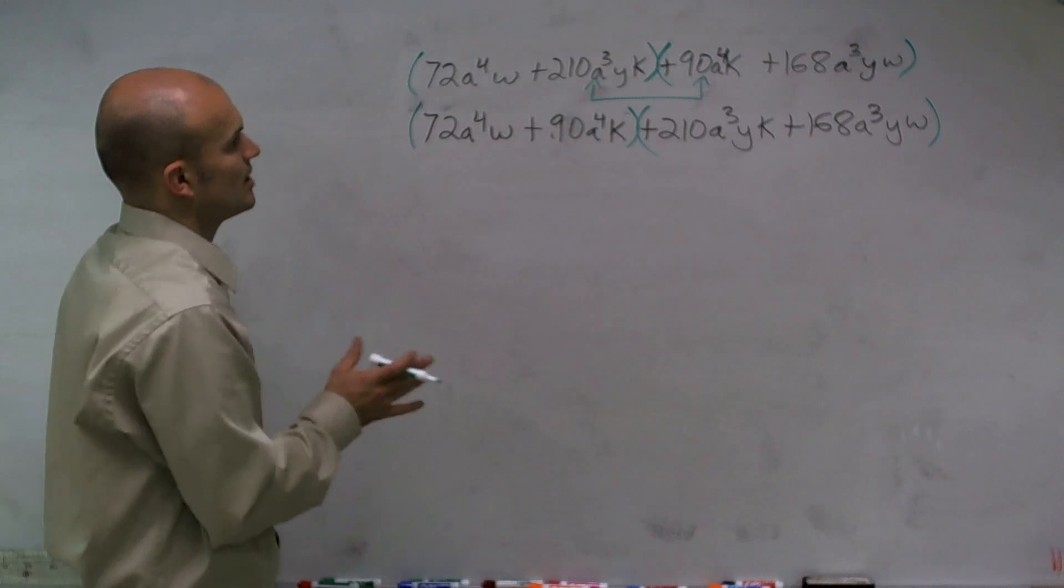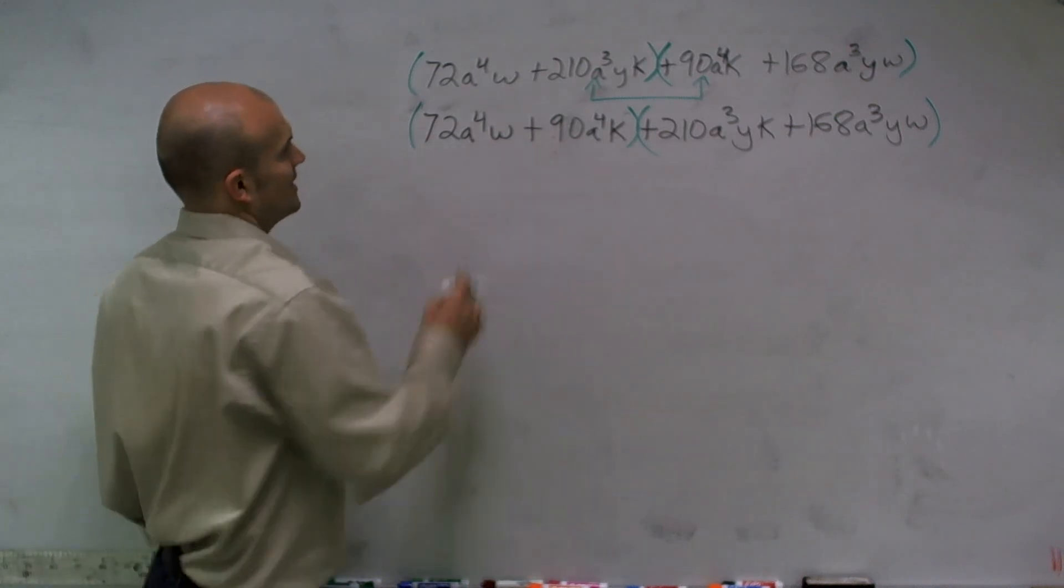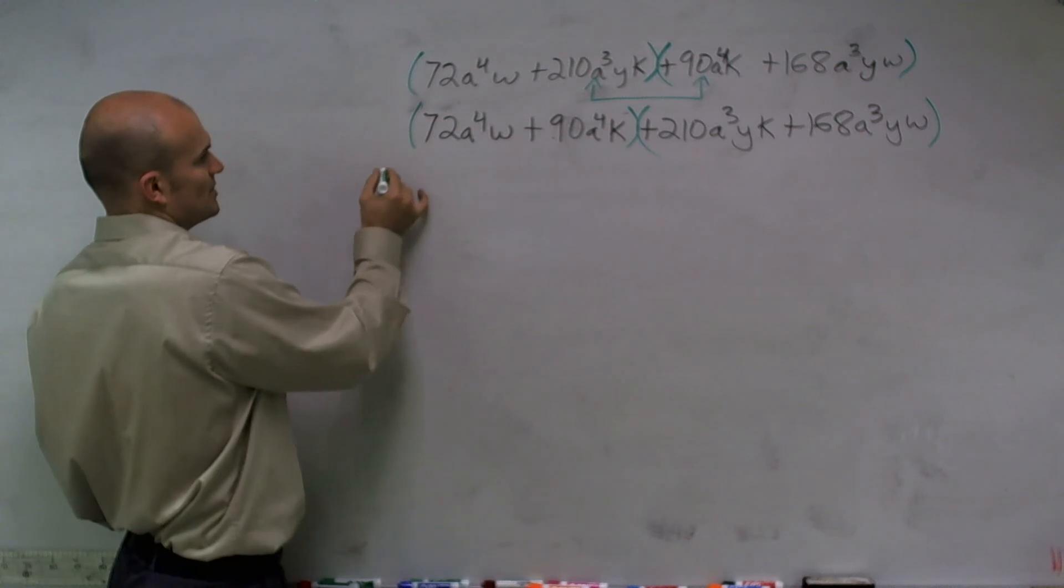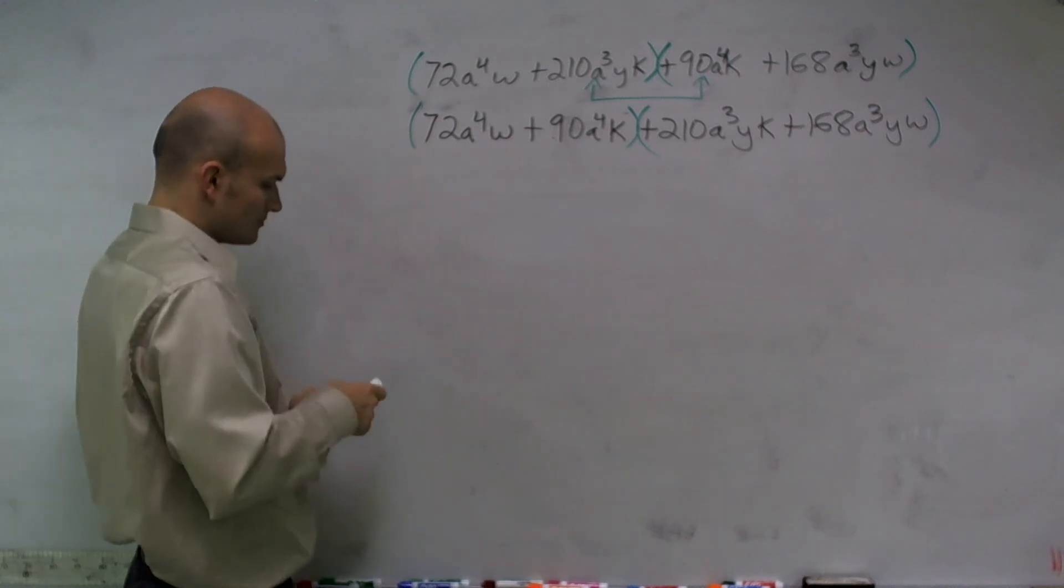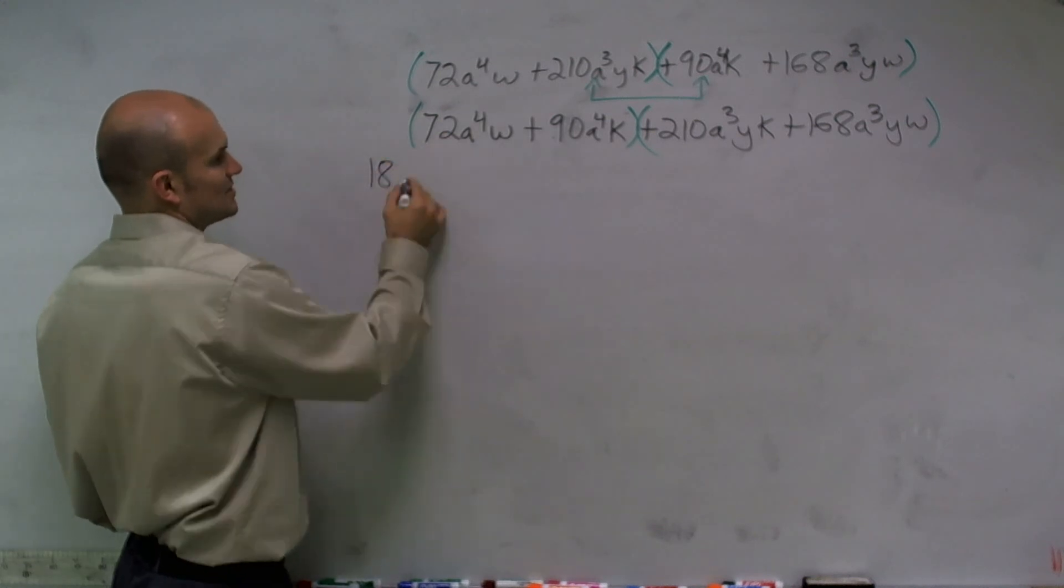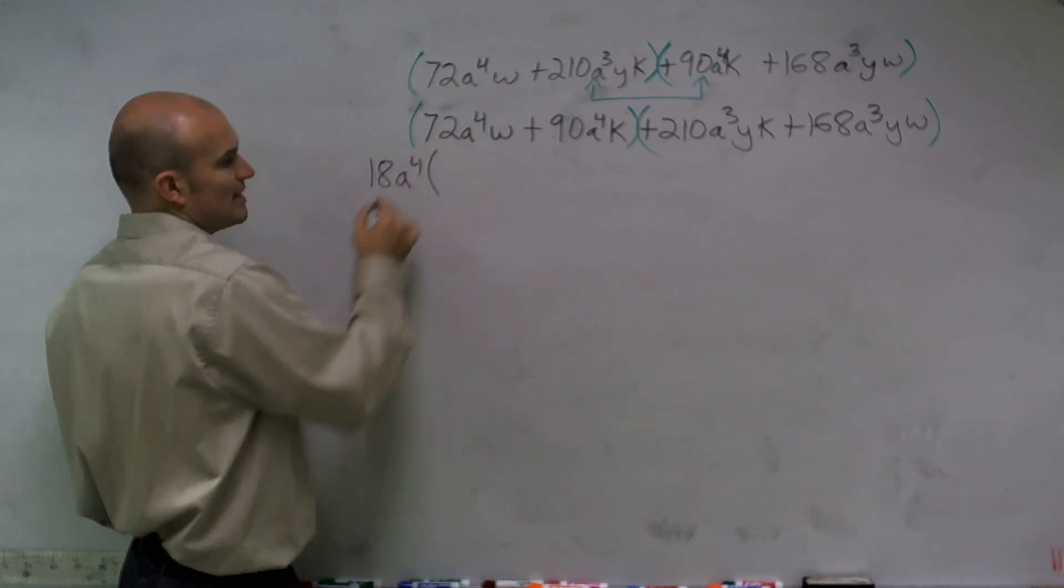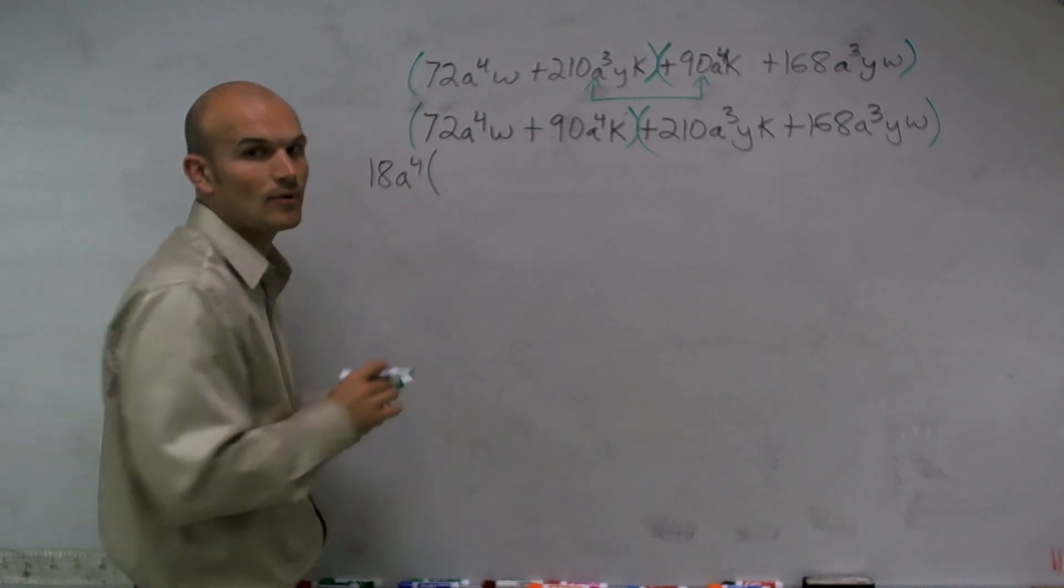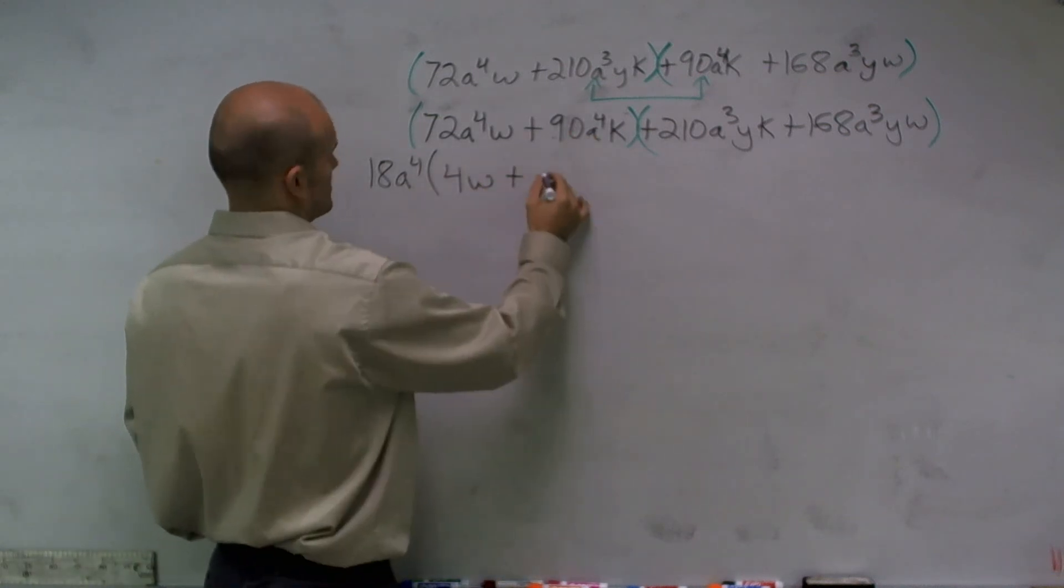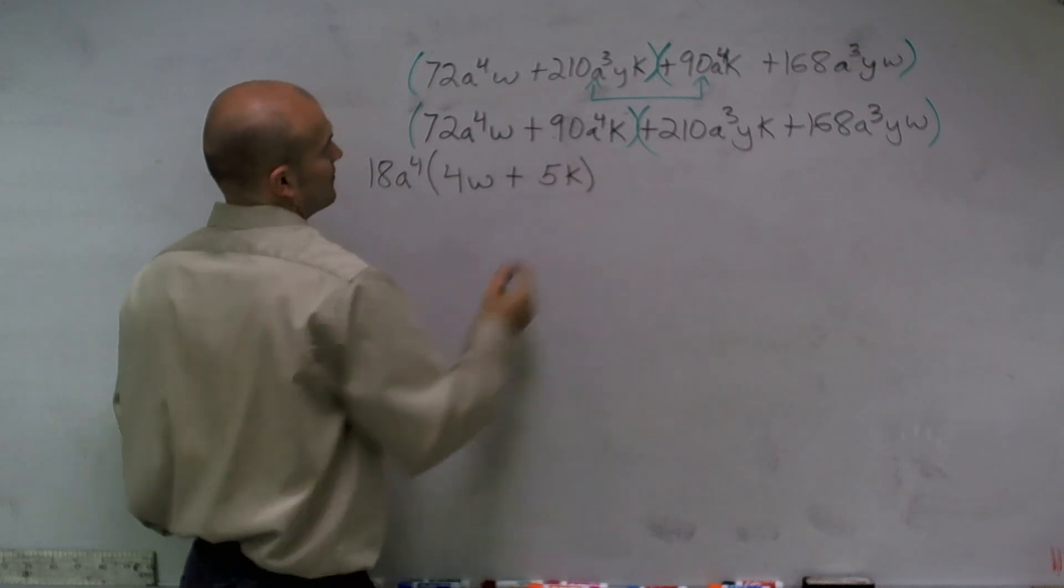So I look at my numbers, and I notice that the common factor out of my numbers is going to be 18. So I'll factor out 18, and then out of the variables, the greatest common factor is a⁴. When I factor it out, what I'm left with is 4w + 5k.